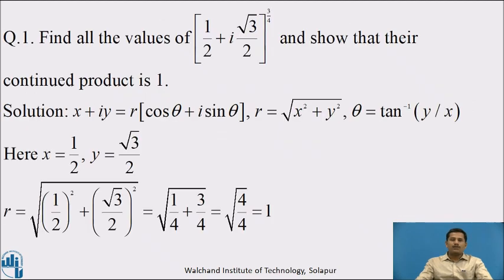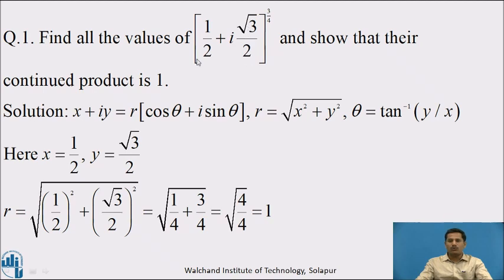Now let us consider the first example. Find all the values of (1/2 + i·√3/2)^(3/4) and show that their continued product is 1.